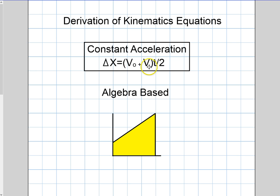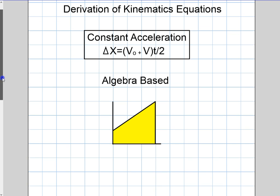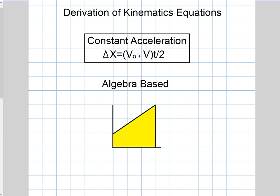This is a very good formula. Basically it's a way that you can find the displacement by just knowing the initial velocity, final velocity, and time. In other words, there's no acceleration involved. So let me show you an algebra-based derivation here, and then on the next video I'm going to show you how to do this using calculus.